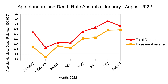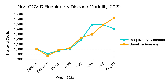So what are the causes of these excess deaths? Here's a chart of non-COVID respiratory illness mortality — things like influenza, pneumonia, and bronchitis. It's pretty much been bang on average this year apart from August where it seems to have dipped below average, so these illnesses don't really account for any excess deaths.